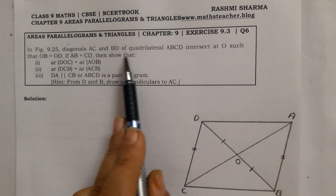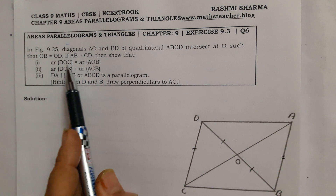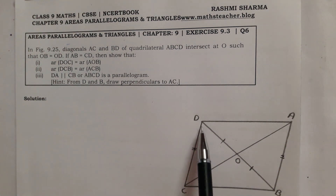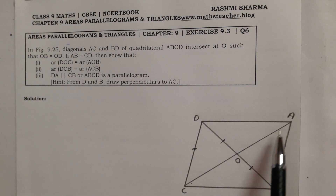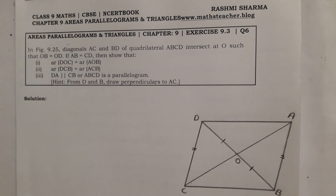Then show that Area of Triangle DOC equals Area of Triangle AOB. That is what we have to prove here.